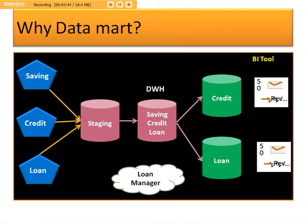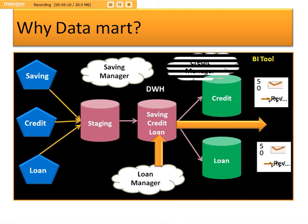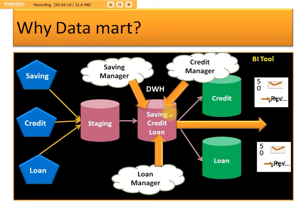So what is the use of data mart? Let's understand with a realistic scenario. Suppose we don't have any data mart — we only have the data warehouse. In that case, the loan manager will access the data warehouse to see loan information. At the same time, the saving manager and credit manager will also access the data warehouse. So if three types of managers are accessing the data warehouse database at the same time, the performance will slow down. At the same time, we need to consider security purposes — the loan manager need not see the credit card information or the saving account information. So we need good performance and data security.